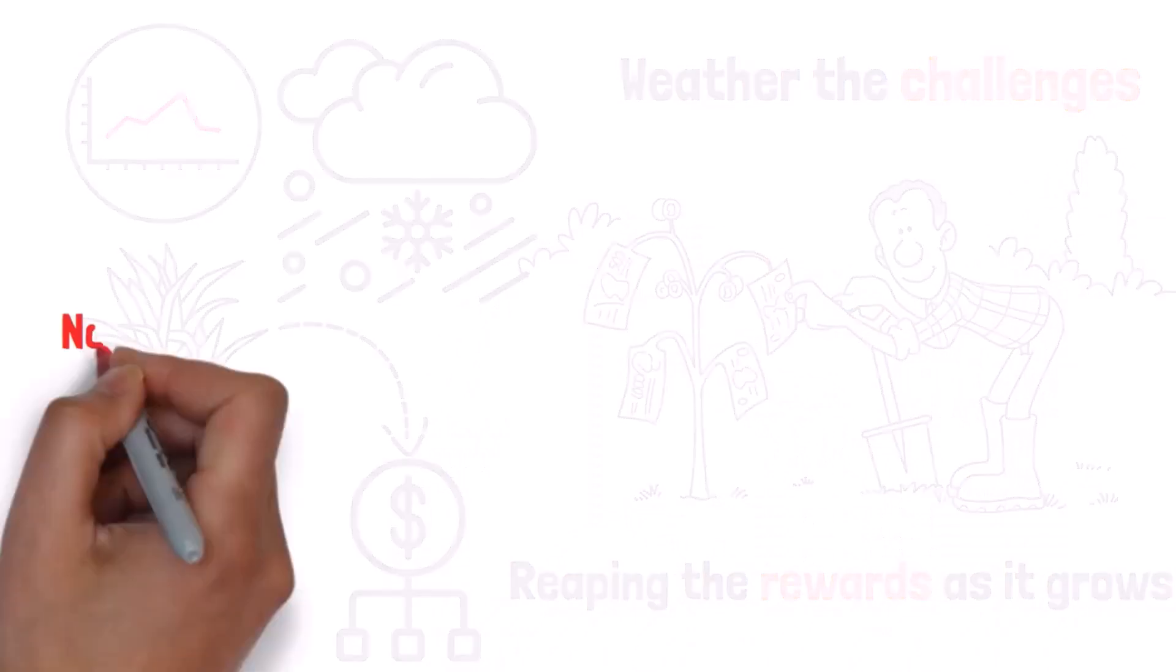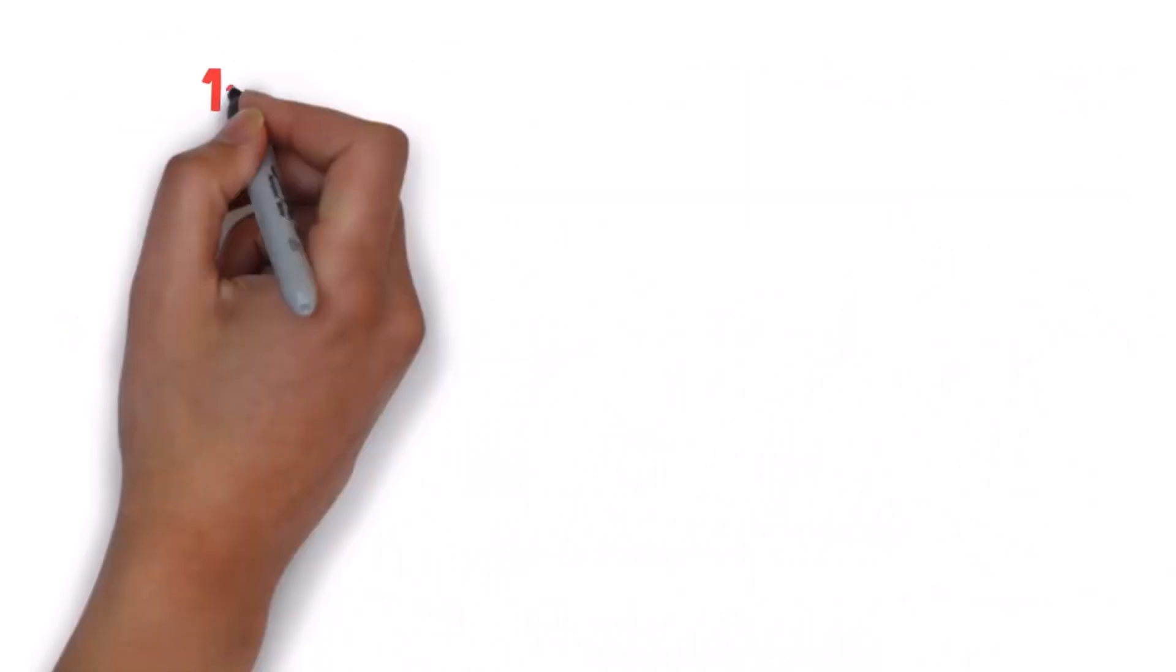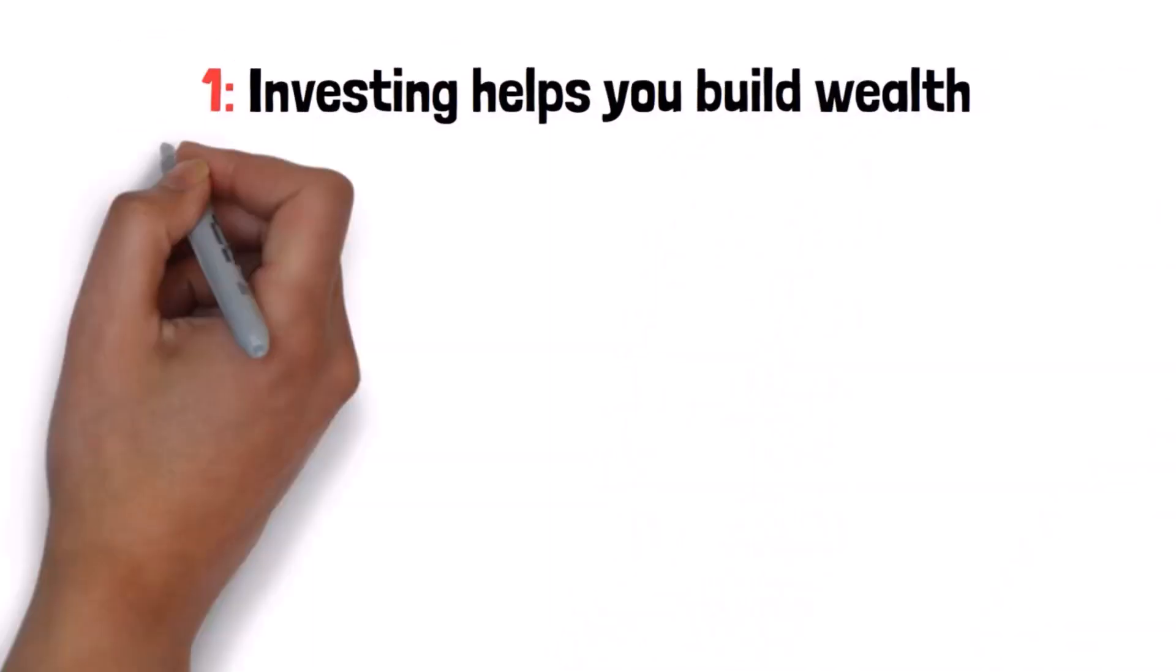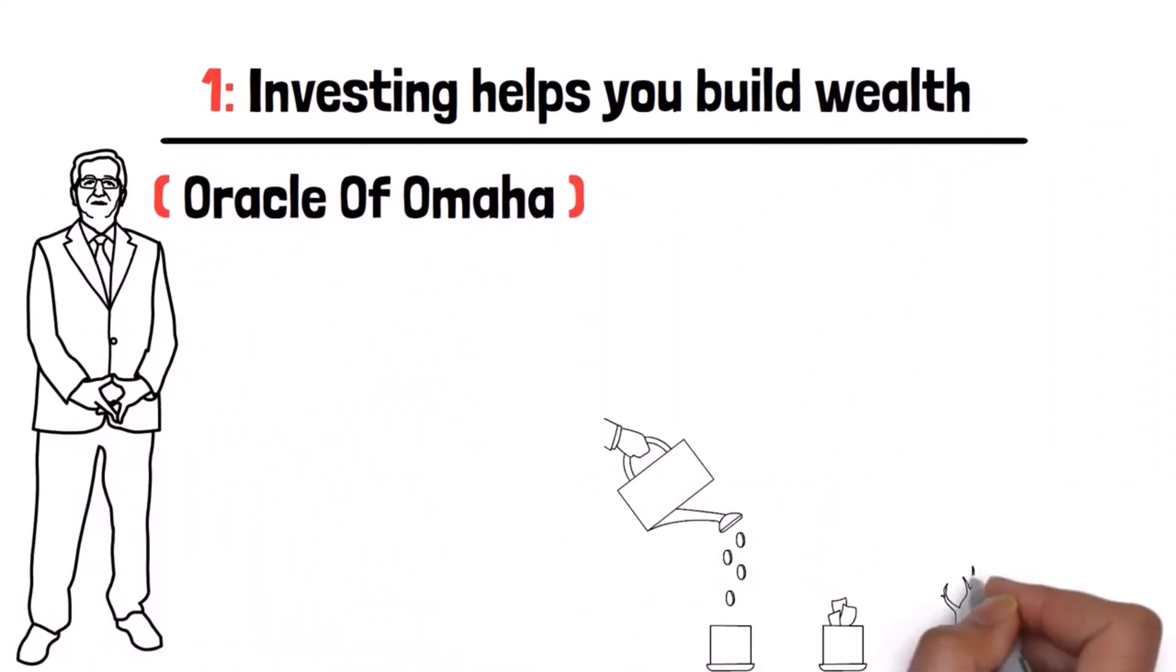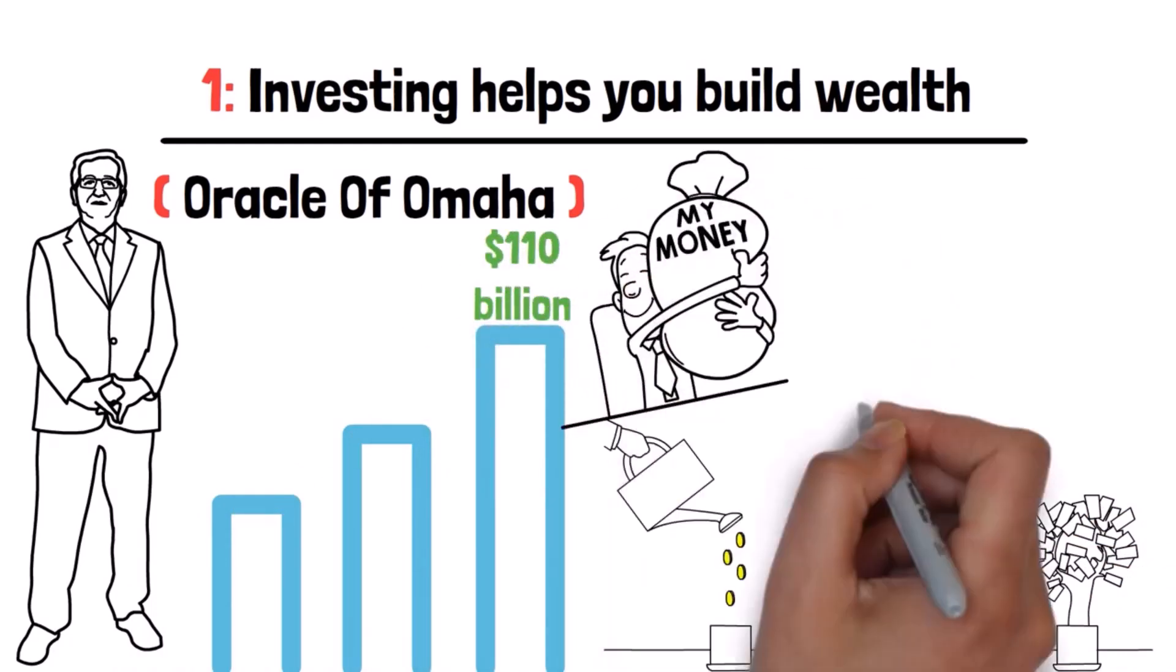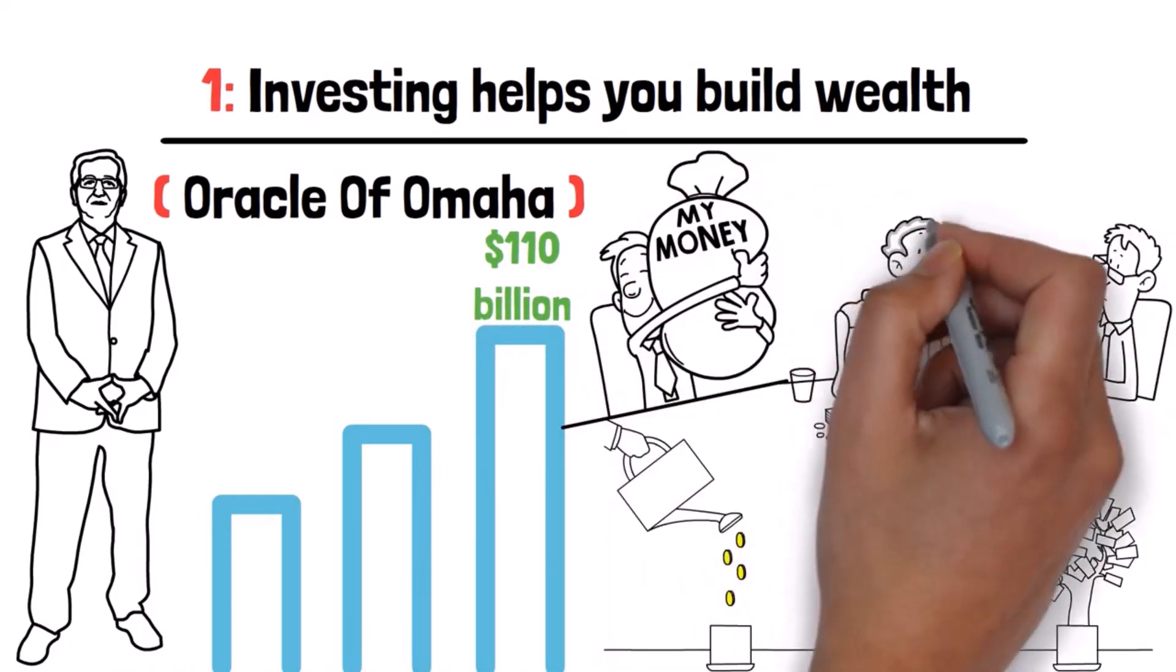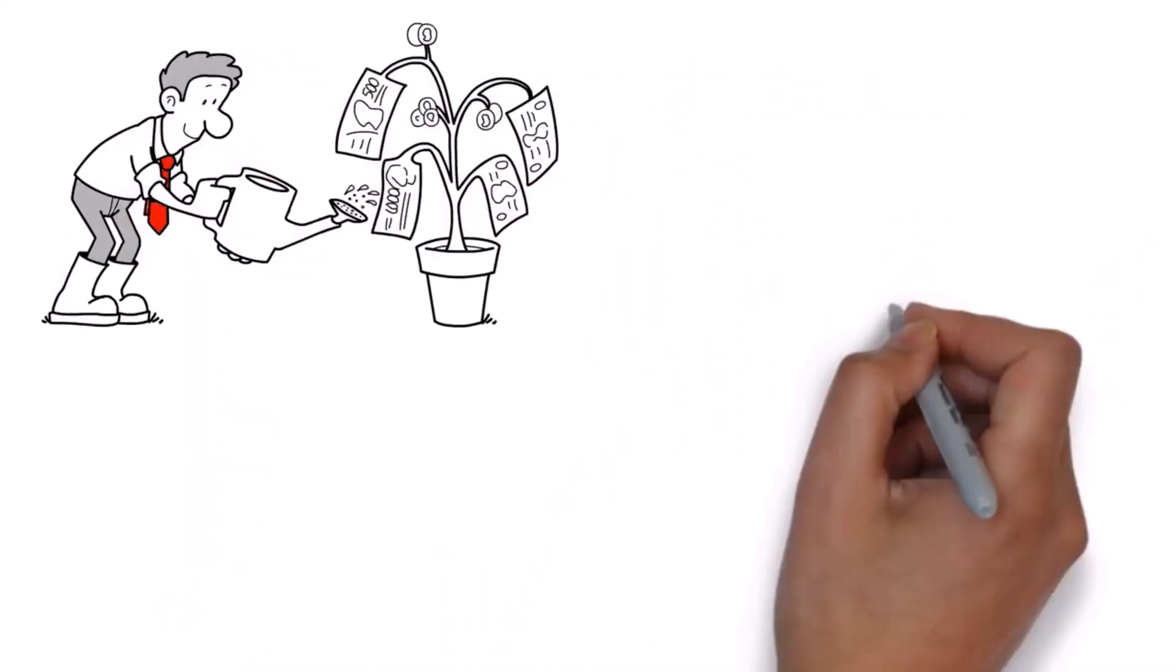Now that you know what investing is, why is it important? One, investing helps you build wealth. Warren Buffett, aka the Oracle of Omaha, epitomizes the power of investing in building wealth. With a net worth exceeding $110 billion, Buffett's journey showcases the potential of wise financial decisions.